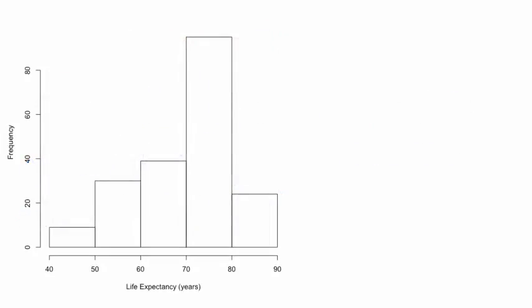Let's start with a histogram of life expectancy for the 197 countries and territories for which a 2011 value of life expectancy was available. The first step in constructing a histogram is to divide the data values into intervals or bins that are mutually exclusive, so that they don't overlap, and exhaustive, so that we don't miss any of the data. Bins are usually equal in size, but they don't have to be. The life expectancies range from about 48 to 83 years, so we've defined our bins to capture every decade from 40 to 90.